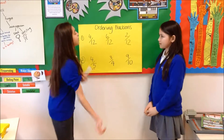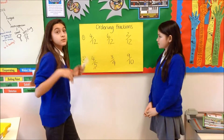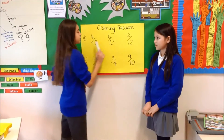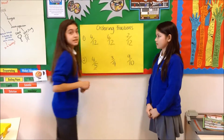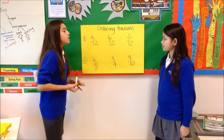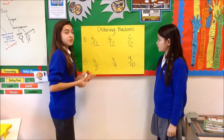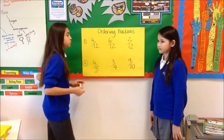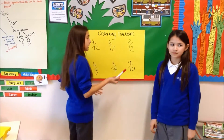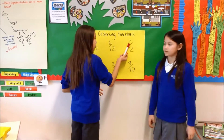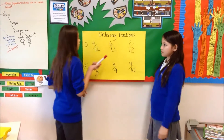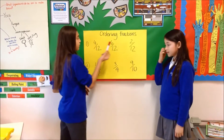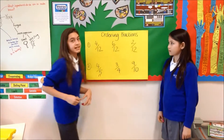So here, this one's the easy one. All the denominators are exactly the same, but the numerators are different. So what you have to do is find the smallest, which is 2. Then you have to find the second, fourth, and then the sixth.